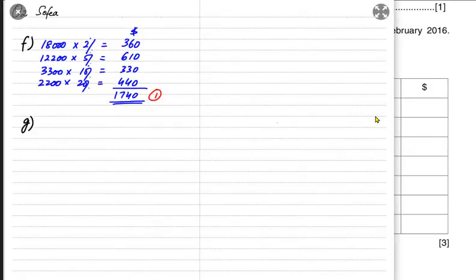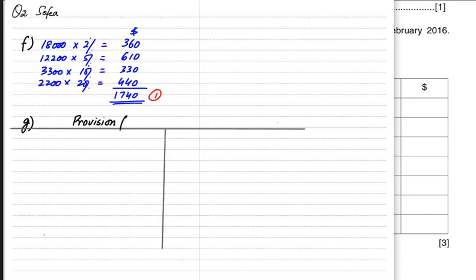We need to make a provision for doubtful debt account. As studied in the previous lesson, the provision is a contra asset — anything that reduces the value of our asset. The asset is debit in nature, so whenever our doubt increases, it reduces our trade receivable.